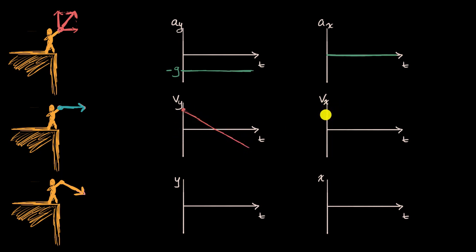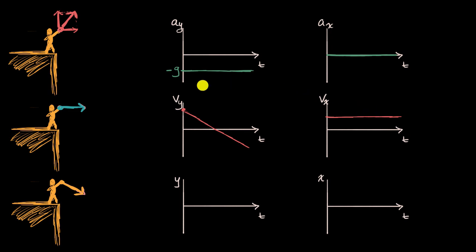What about the velocity in the x direction? It starts positive, and if we're in a world with no air resistance, it's just going to stay positive — we have zero acceleration, so velocity stays constant. One key thing to keep in mind with two-dimensional projectile motion: once you break your vectors into x and y components, you can treat them completely independently. Something may decelerate in the y direction, but that doesn't mean it decelerates in the x direction.